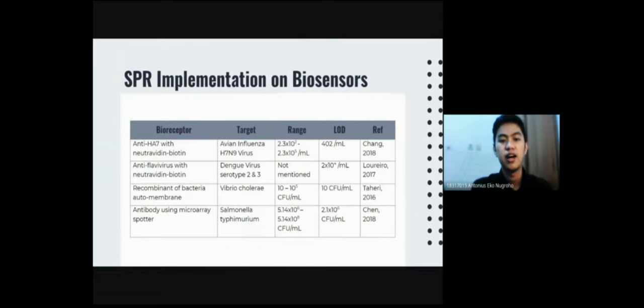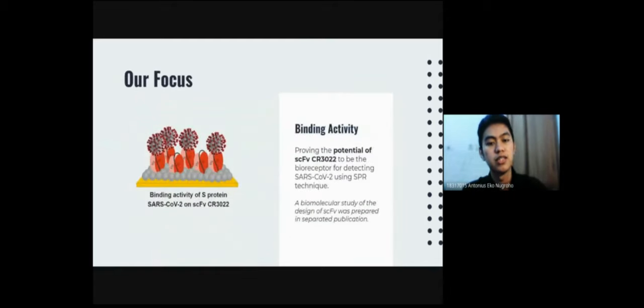And this is the SPR implementation on biosensors development targeting the viruses and bacteria. And our focus in this work is the binding activity of the RBD of S protein SARS-CoV-2 and the SCFV-CR-3022. We aim to prove the potential of SCFV-3022 to be the bio-receptor for detecting SARS-CoV-2 using the SPR technique. It's worth to note that a biomolecular study of the design of the SCFV was prepared in the separated publication.